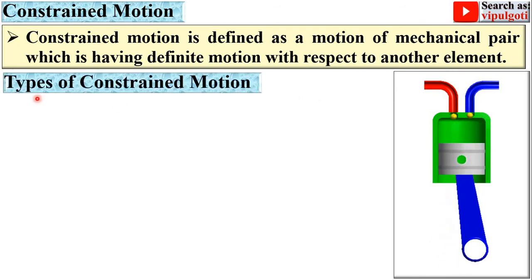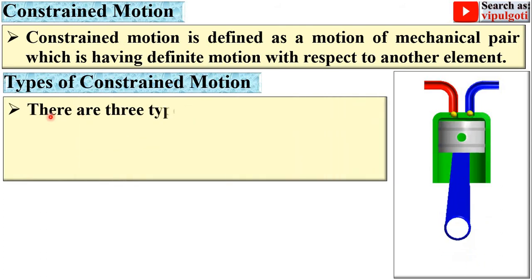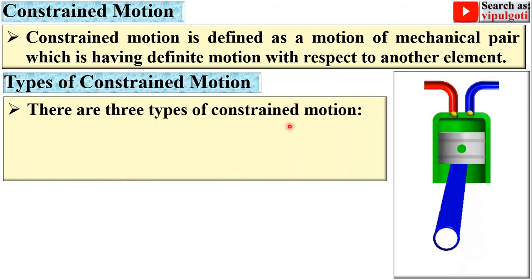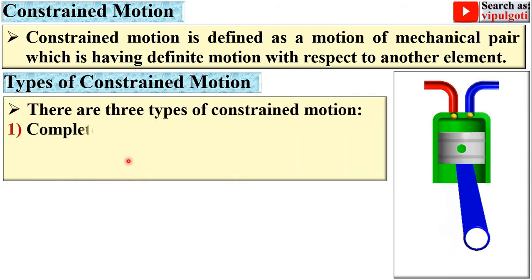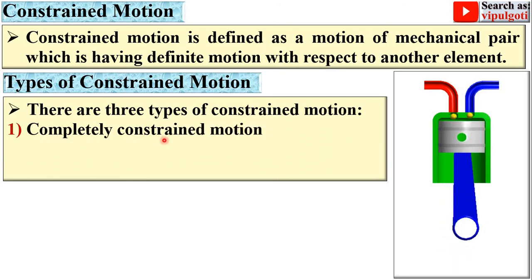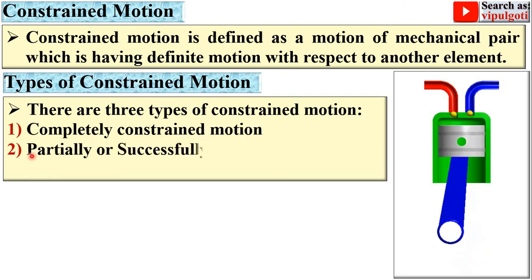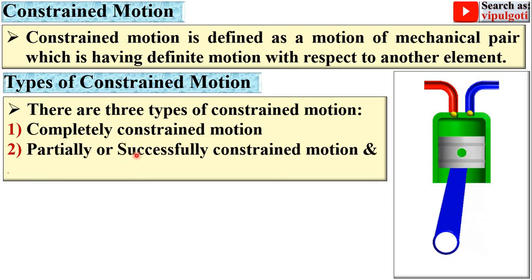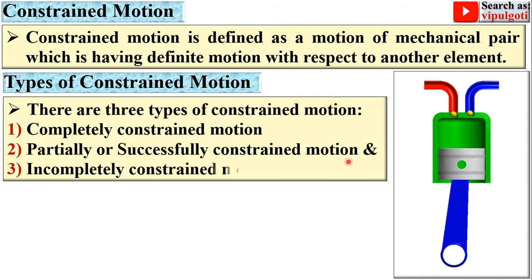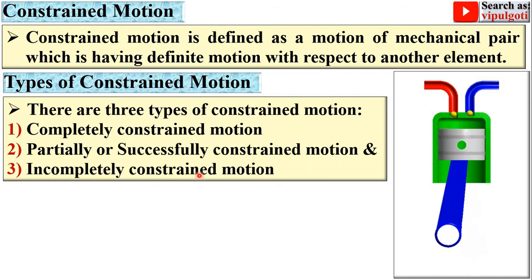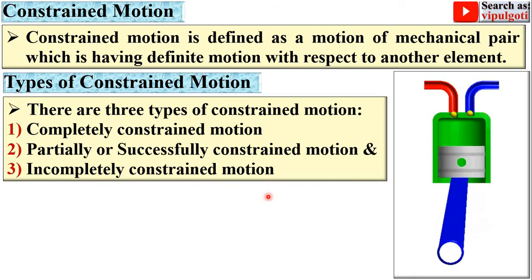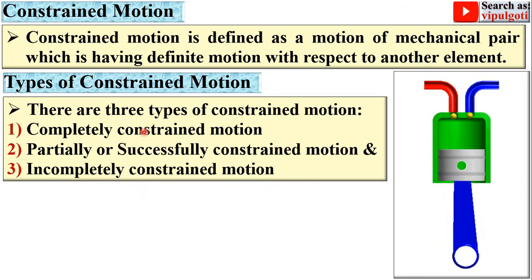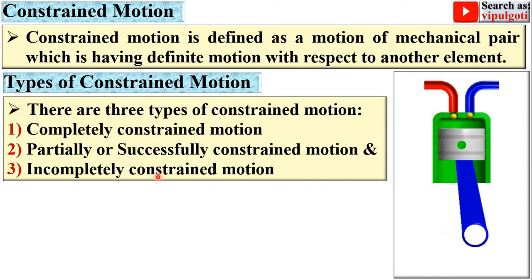Next term: types of constrained motion. Basically there are three types of constrained motion. First, completely constrained motion. Second, partially or sometimes called successfully constrained motion. And third, incompletely constrained motion. Let's see all three types one by one briefly.